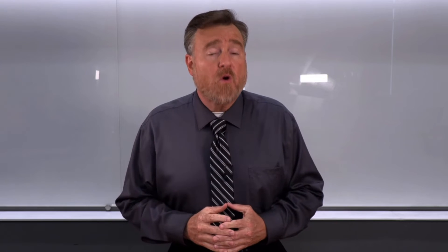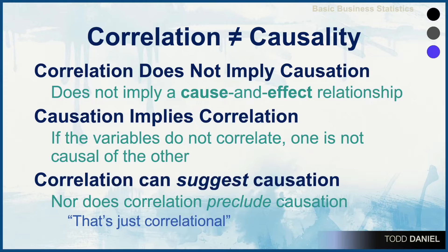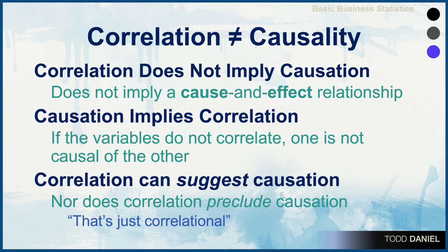Although correlation does not imply causation, correlation does not preclude causation. What I mean is that correlation can suggest when causation exists. If one variable is causing the other to change, they should be correlated. And the absence of correlation does suggest that there is no causation.